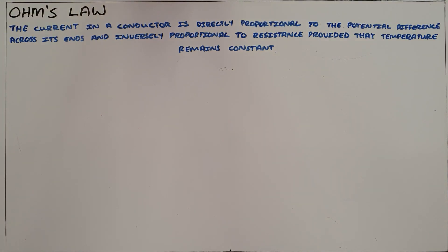Ohm's law states that the current in a conductor is directly proportional to the potential difference across its ends and inversely proportional to the resistance, provided that temperature remains constant.